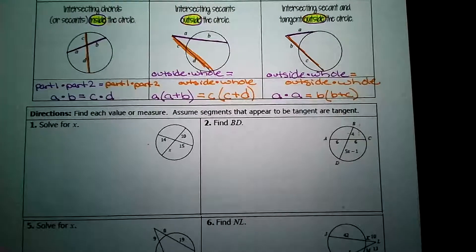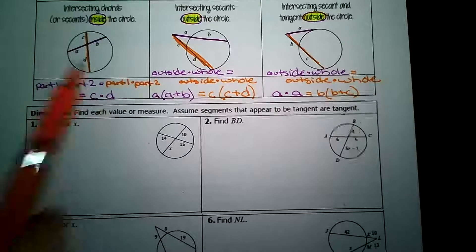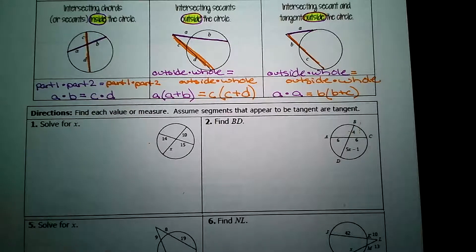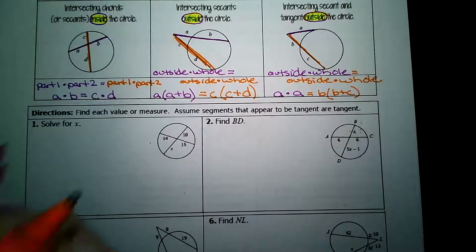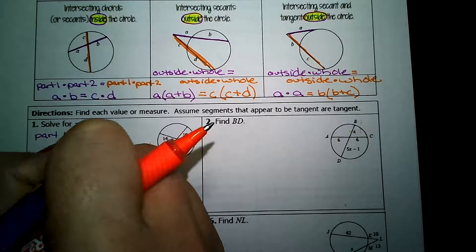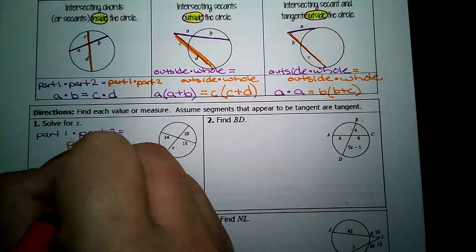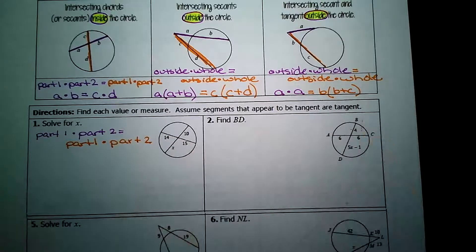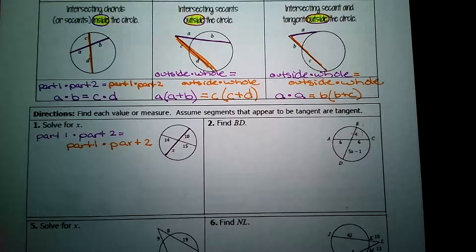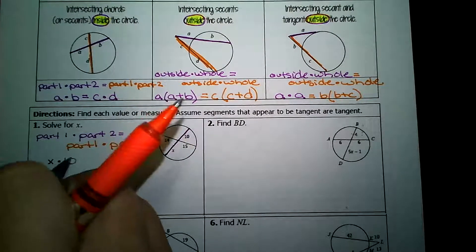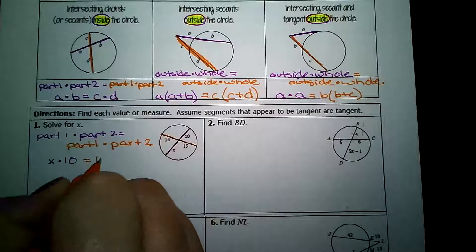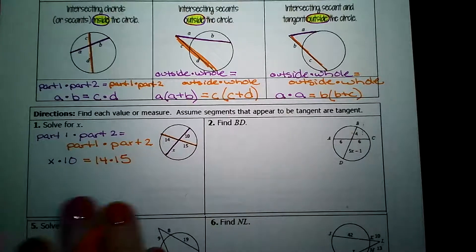Check out example one. Obviously, this is an inside intersection. So these are going to be part one times part two is equal to part one times part two. Two colors. Part one times part two is equal to part one times part two. I'll do one chord in purple. The two parts of this chord are x and 10, so I'll have x times 10. The other chord I'm doing in orange. And the two parts are 14 times 15. So this becomes our equation to solve.